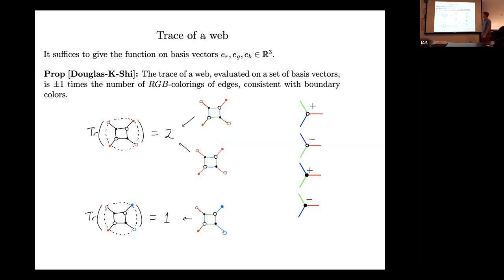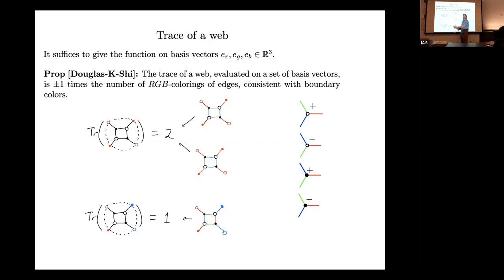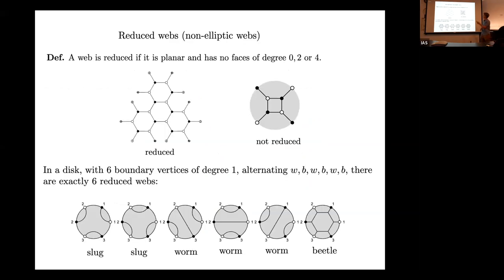Algebraically, there's a tensor network definition where you assign to each interior vertex a certain tensor — an element of a tensor product of three copies of the vector space — and then contract along every edge. The sl3-invariance is built in from that tensor network definition. And yes, reduced webs form a basis for all sl3-invariant multilinear functions — let's discuss that now.